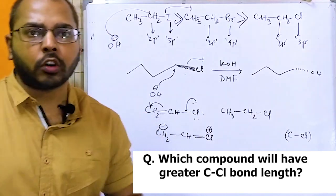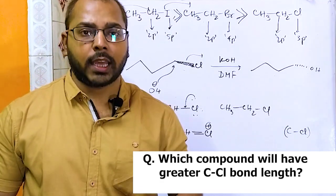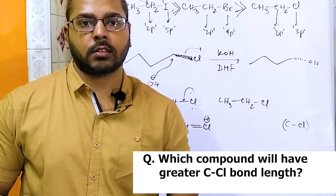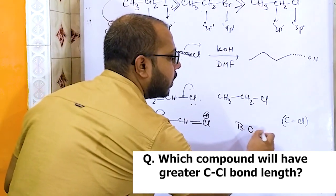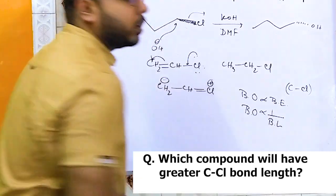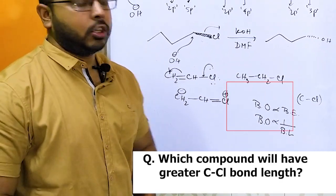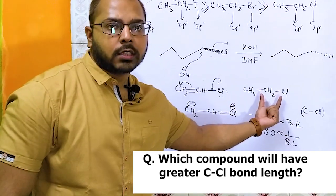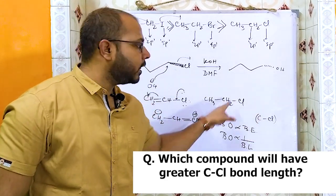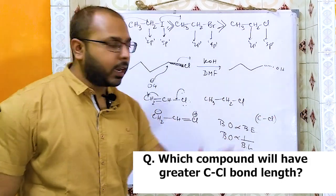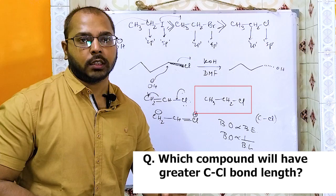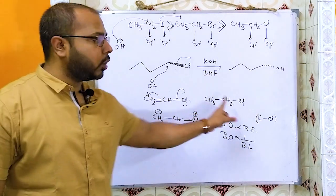As I taught in the chemical bonding and molecular orbital theory parts: as the number of bonds increases, bond length decreases, because bond order is directly proportional to bond energy and inversely proportional to bond length. Vinyl chloride has double bond character (higher bond order), so it has a shorter C-Cl bond. Ethyl chloride has a single bond C-Cl, so it has the longer bond length.